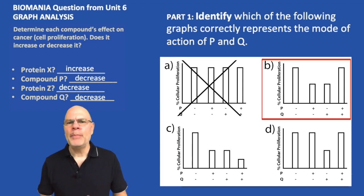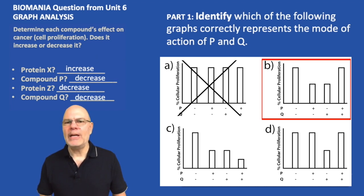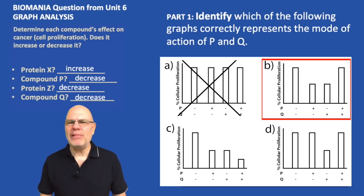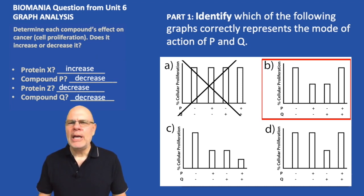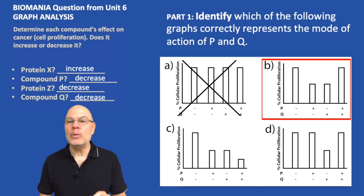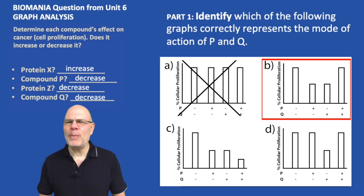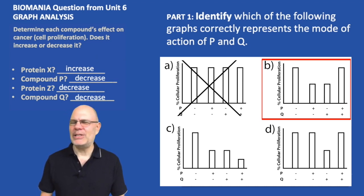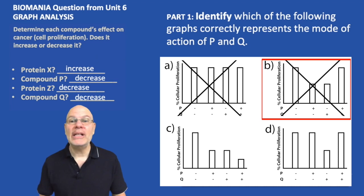Now let's look at Graph B. We have our control on the left. The second bar shows that when P is present and Q is absent, cell proliferation goes down — that makes sense. The third bar shows that when P is absent and Q is present, cell proliferation also goes down — that also makes sense. But the fourth bar, when both are present, shows cellular proliferation the same as the control. That doesn't make sense. Let's drop Graph B.